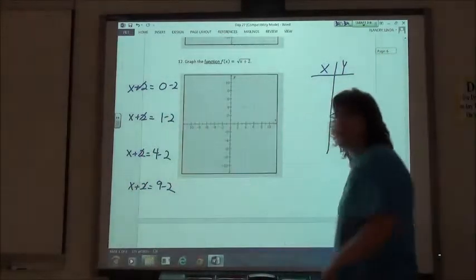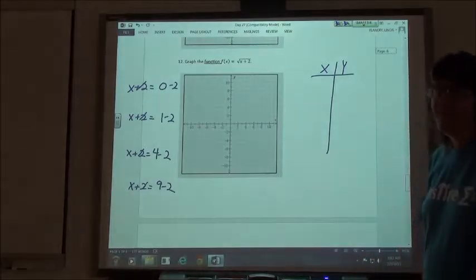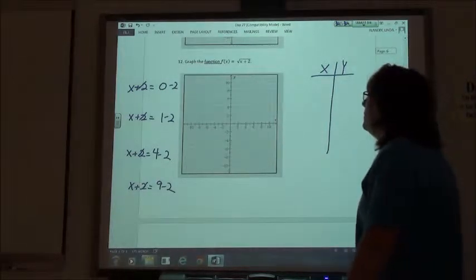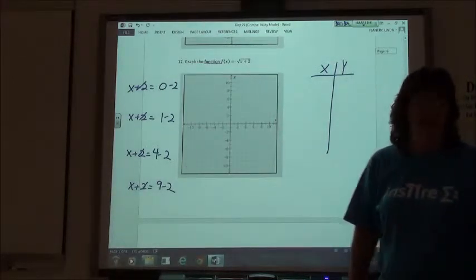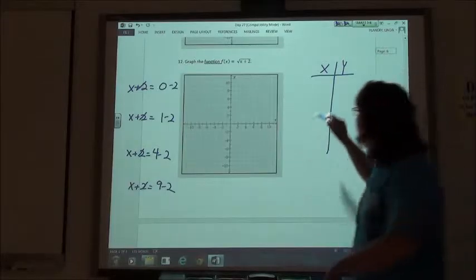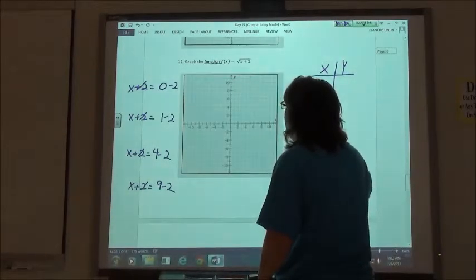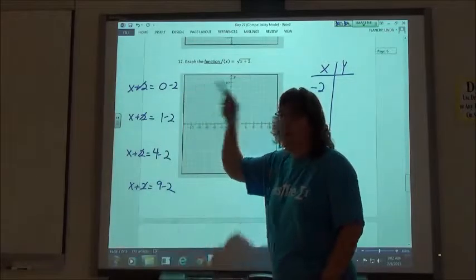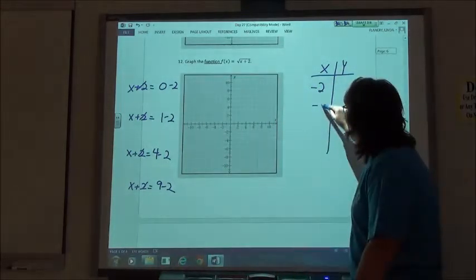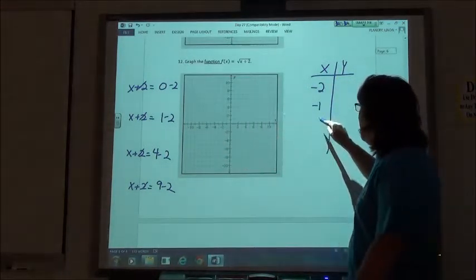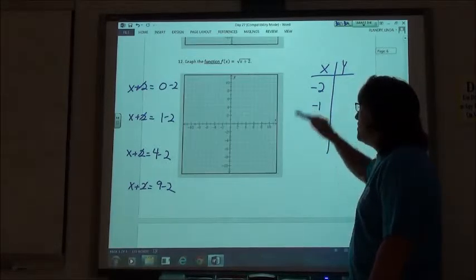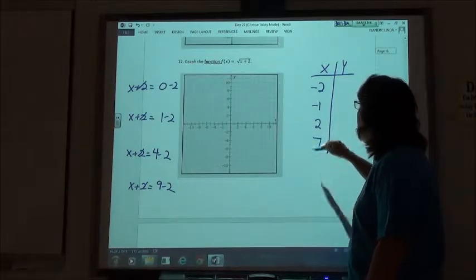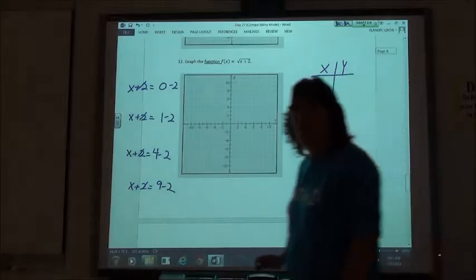So if you solve each of those, you're going to get negative 2, then negative 1, then 2, and 7. So those are the four values we want to plug in for x.